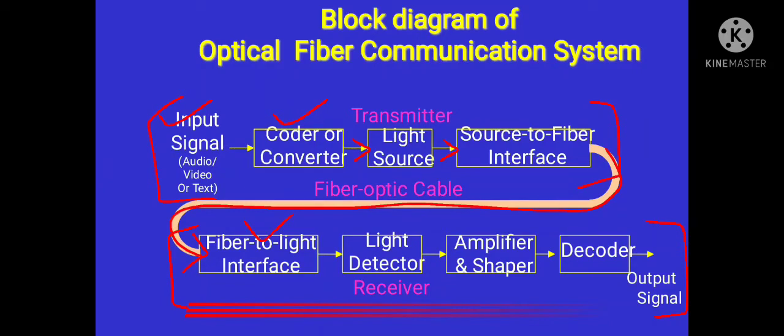So the output of this block is connected to next block, which is named as light detector. As its name indicates, here the light is detected, light is sensed, and for sensing this particular light, we have to use photodiodes or phototransistors for this purpose.